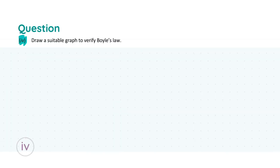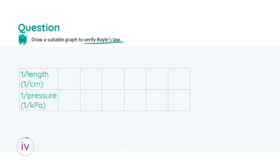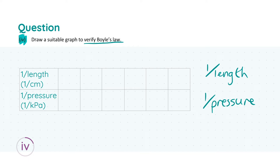Moving on to part iv, we're asked to draw a suitable graph that will verify Boyle's law. When verifying a proportional relationship like this, the graph should go through the origin. First, we need to look at all the data given in the question and determine if we need to alter it into a usable form. We're actually interested in 1/L (one over length) and 1/P (one over pressure) — that is, the reciprocal of both length and pressure.